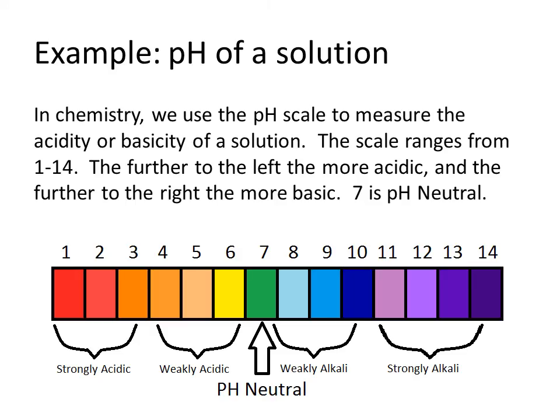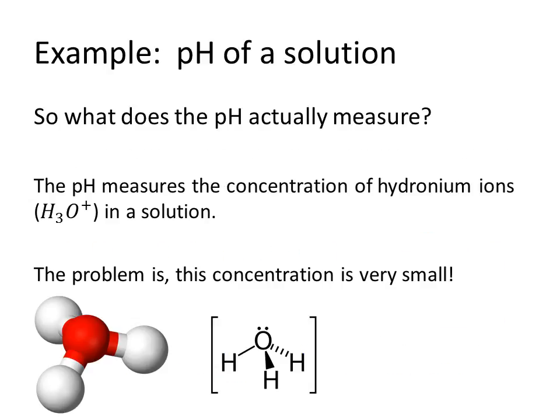One example of this is using the pH. In chemistry, we use the pH scale to measure the acidity or basicity of a solution. The scale ranges from 1 to 14 — the further to the left you are, the more acidic, and the further to the right, the more basic. Seven, right in the middle, is pH neutral. So what does the pH actually measure? The pH of a solution measures the concentration of hydronium ions, H₃O⁺, in the solution. The problem is that in solutions, this concentration is very small, so we're dealing with very small numbers and want to make a good scale for those.